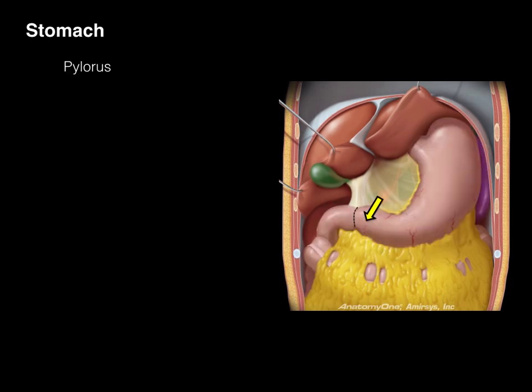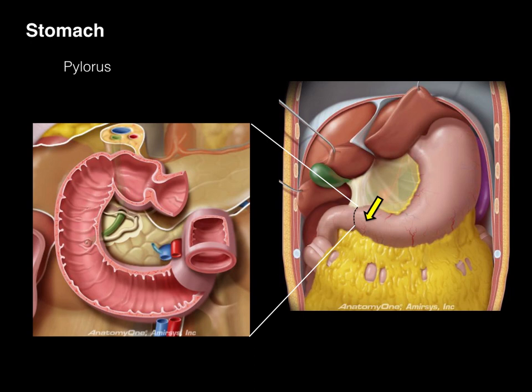The very terminal part of the stomach is called the pylorus. When we look at a section where the pylorus has been cut and the duodenum — the next part of the small intestine — is visible, right between them we have a thickening of the inner circular layer of the muscularis externa called the pyloric sphincter. It contracts to keep food from going from the duodenum back into the stomach.